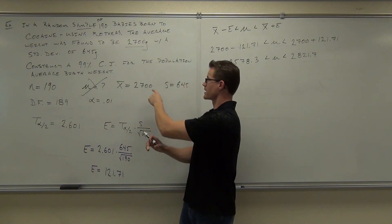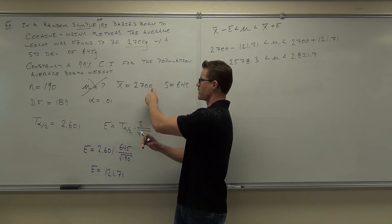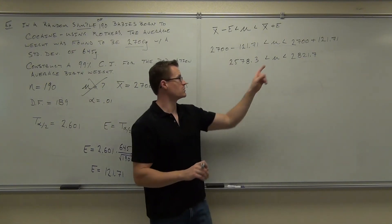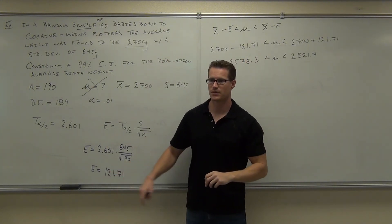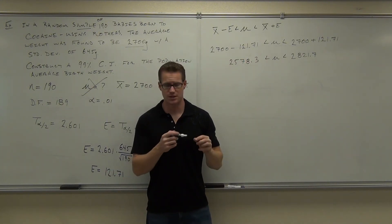The problem is that if this was like 2,700 point something something and you round it to the 10th here, that would be a problem. Okay, that would be a problem. Or it could be potentially a problem.